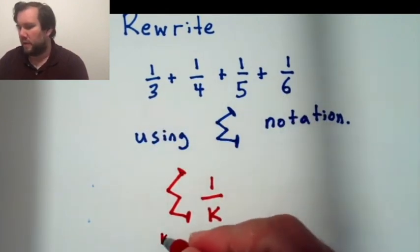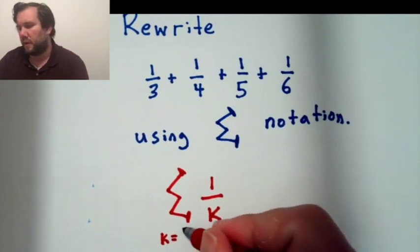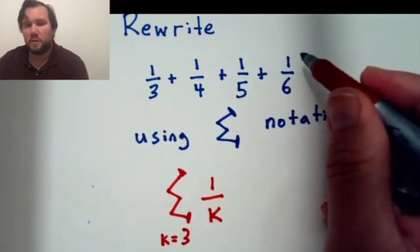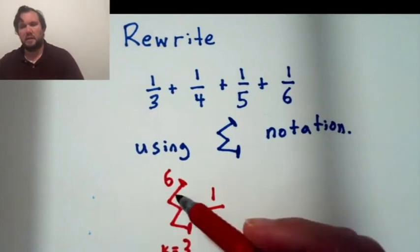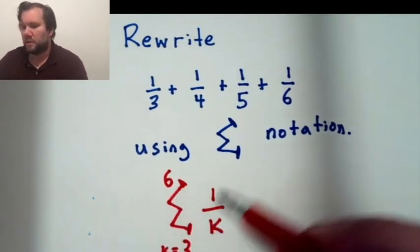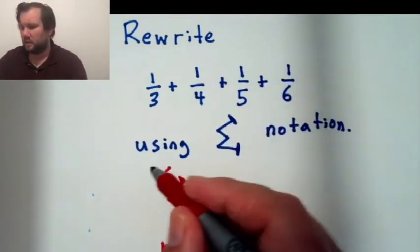And I'm adding up the 1 over k's from some starting point to some ending point. So this 1 over k starts with 1 over 3, so k would be 3, and ends with 1 over 6. So k would be 6 at the end. So going from 3 to 6, 1 over k summation represents the same thing as this expression.